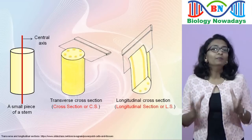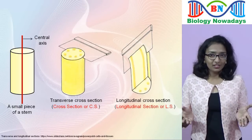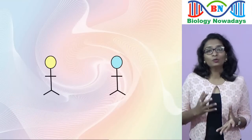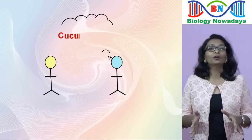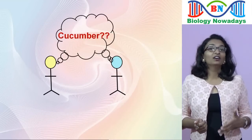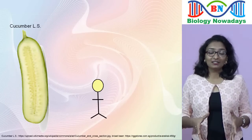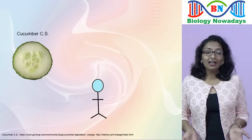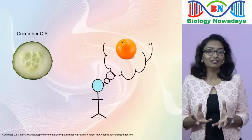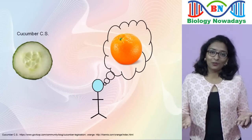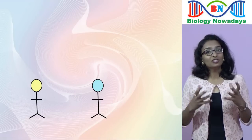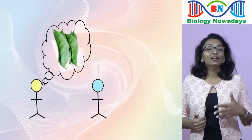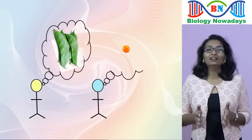In anatomy, it is important to analyze both transverse (cross sections) as well as longitudinal sections. Let's imagine two persons having no idea about the shape or size of a cucumber. The first person saw a longitudinal section of the cucumber and imagined that cucumber might be like a broad bean. The second person saw the transverse section and imagined that cucumber is spherical like an orange. But we know that both of them are wrong — by looking at one section alone, each person got only a partial insight about the cucumber.